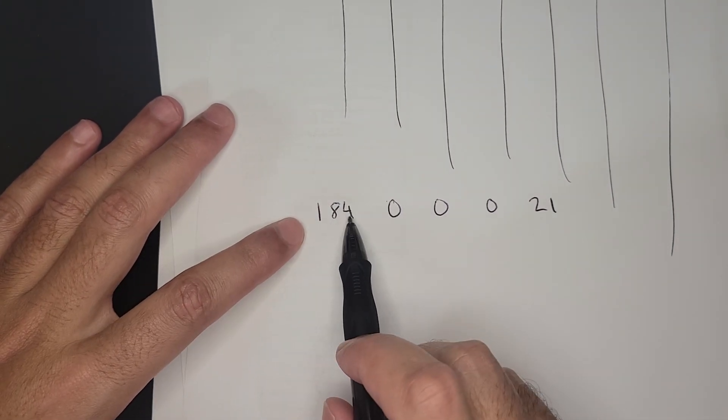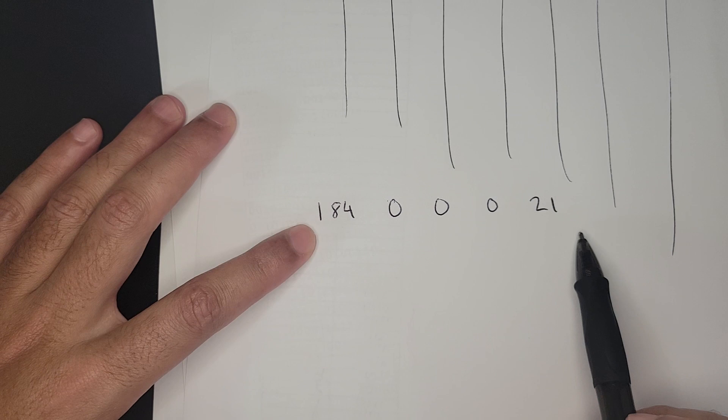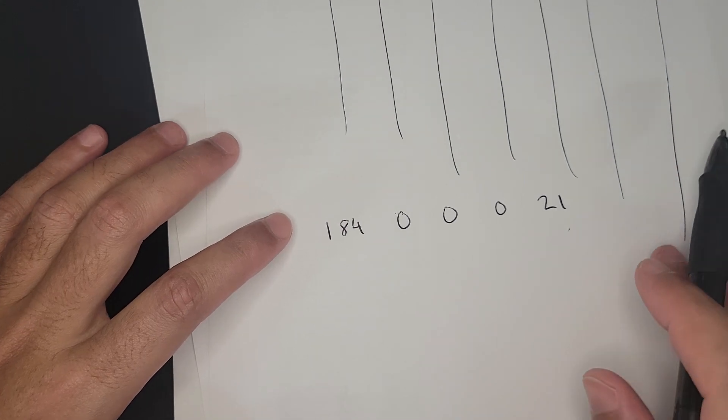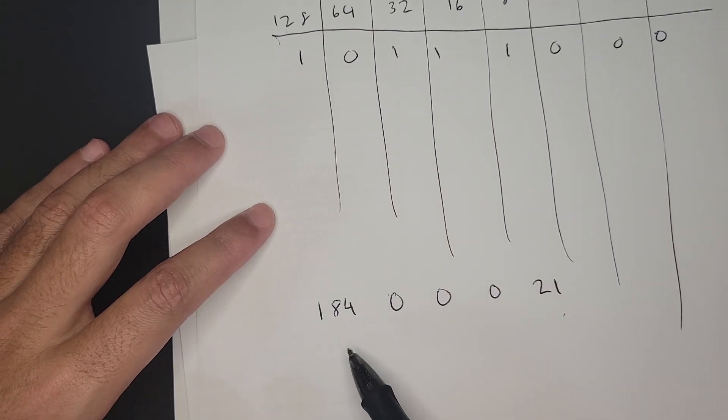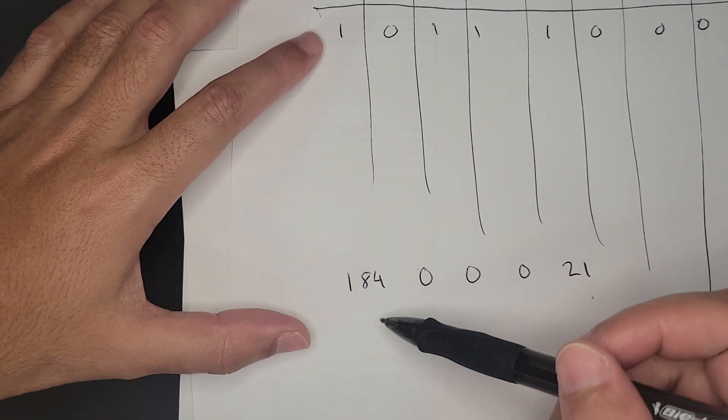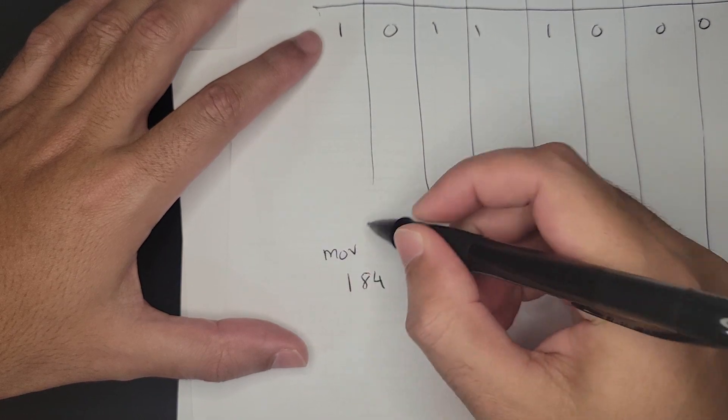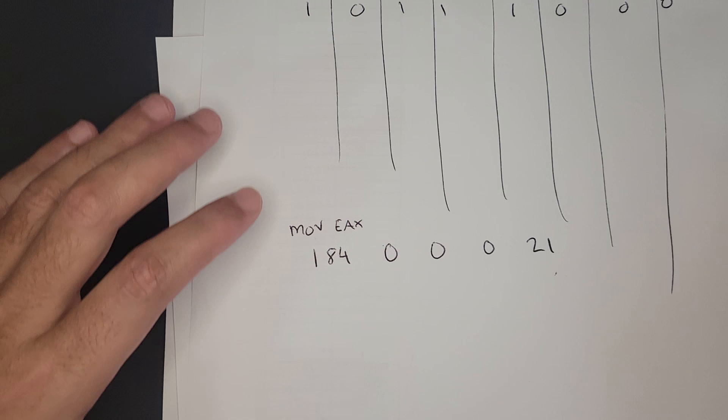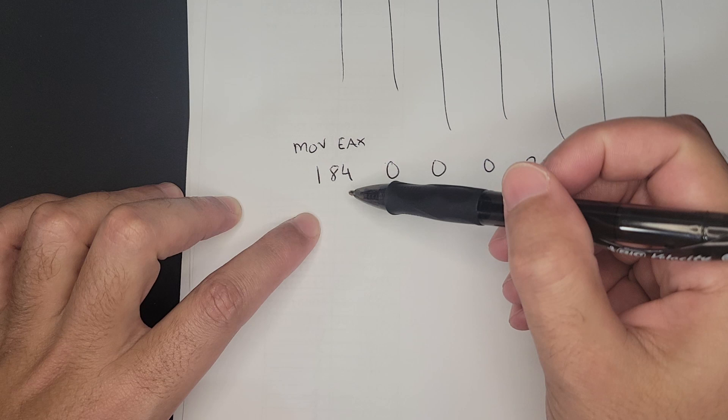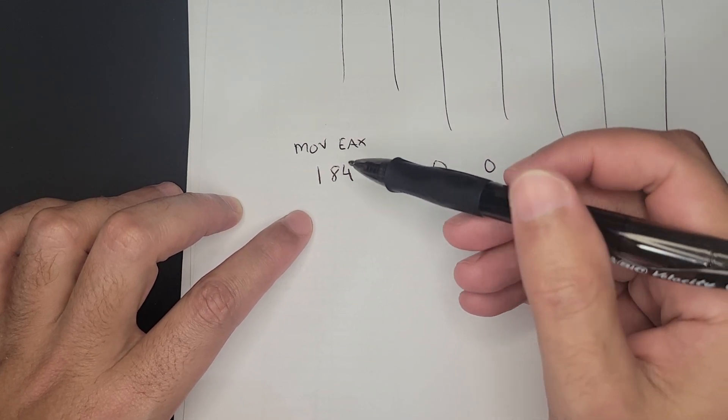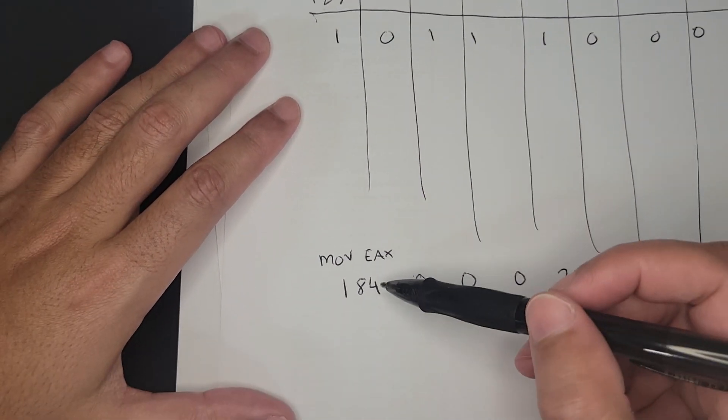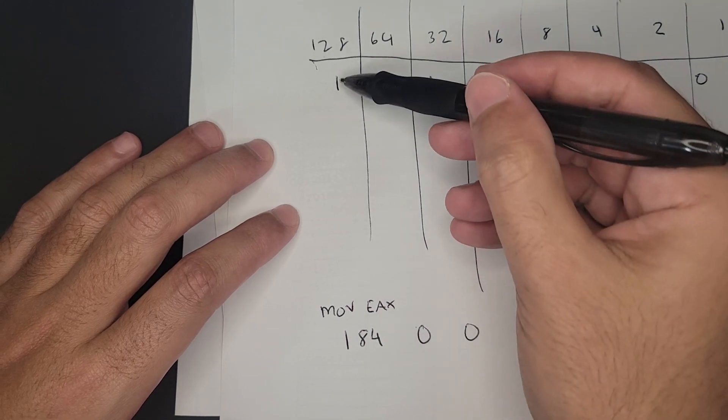So in this case, what do we have as opcode, basically 184 in decimal, and then we have 21 here. In a decimal system, we'd say, okay, 184 means to move to the EAX register, this value 21. We can see that this kind of works, but the problem is that we had to do all this calculation to get this value. So it almost defeats the purpose. It's slightly better than memorizing that 1011100 is moving the EAX command.